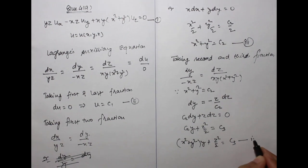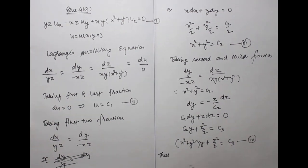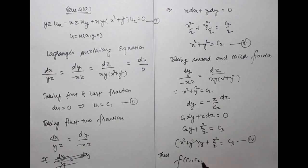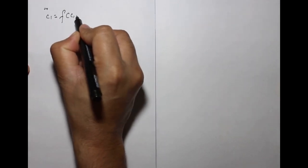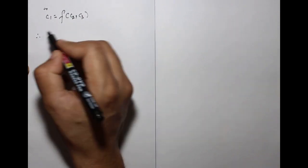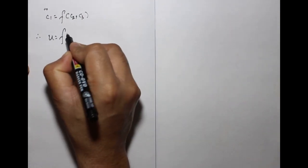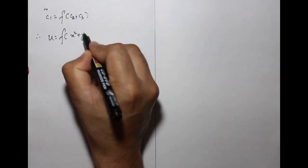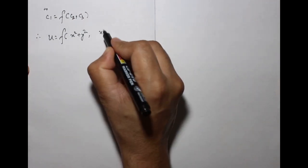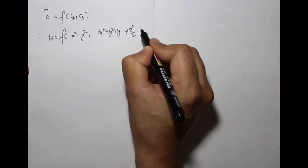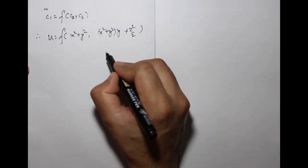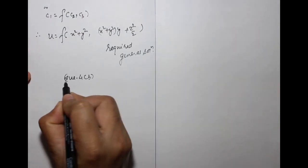Thus the required general solution is f(c1, c2, c3) = 0, or equivalently u = f(x²+y², (x²+y²)·y + z²/2). This is the required solution. Question 4b.